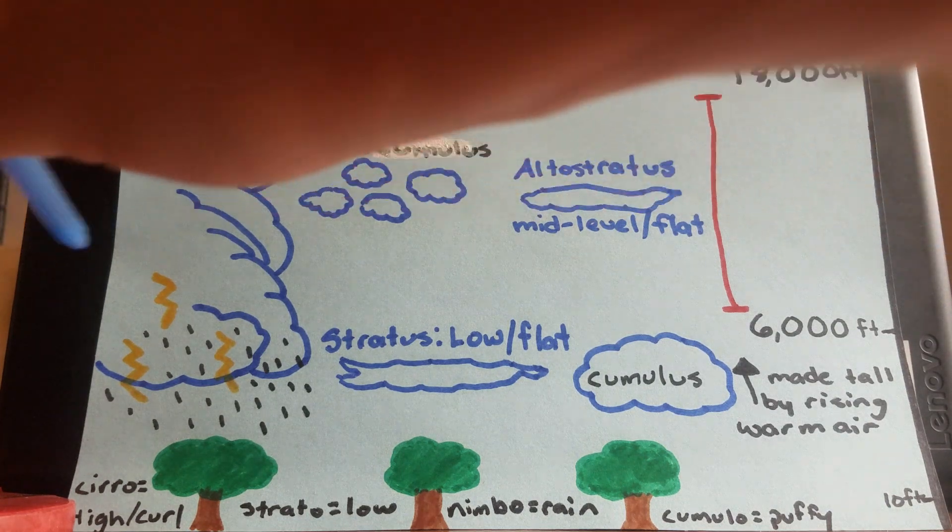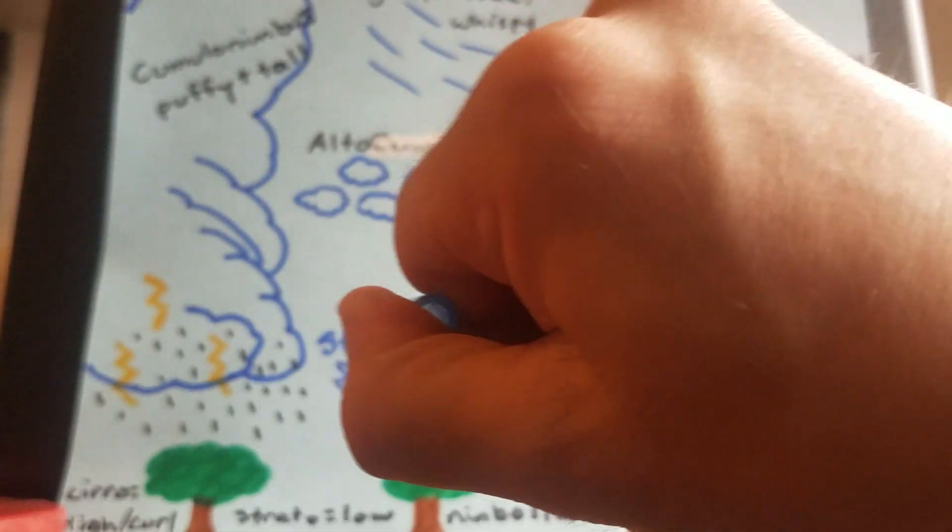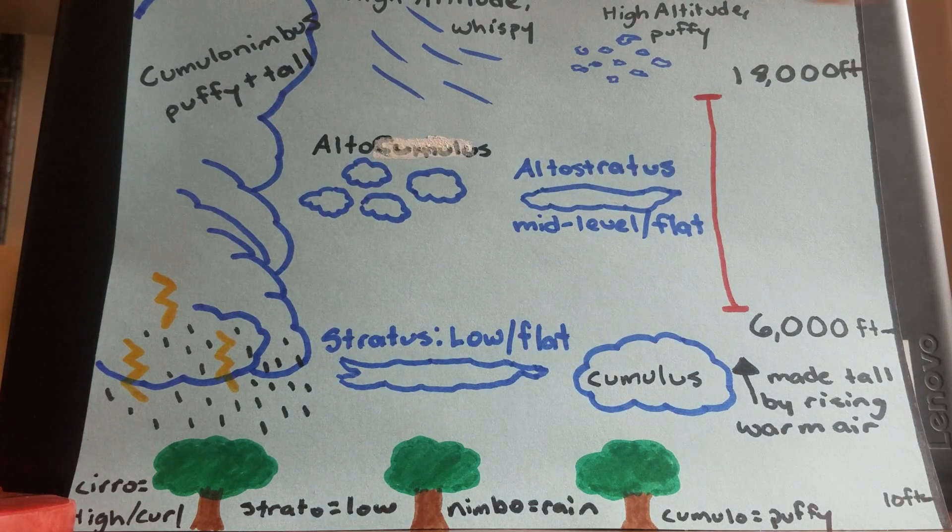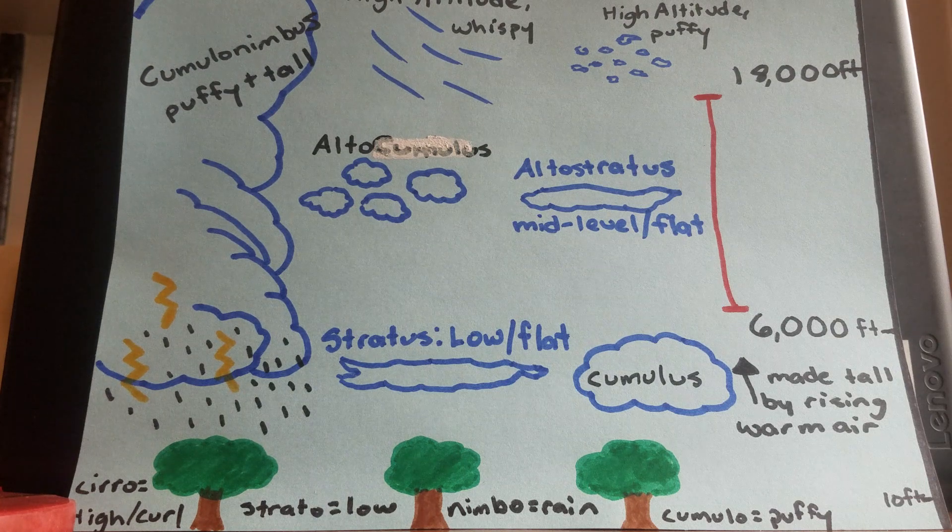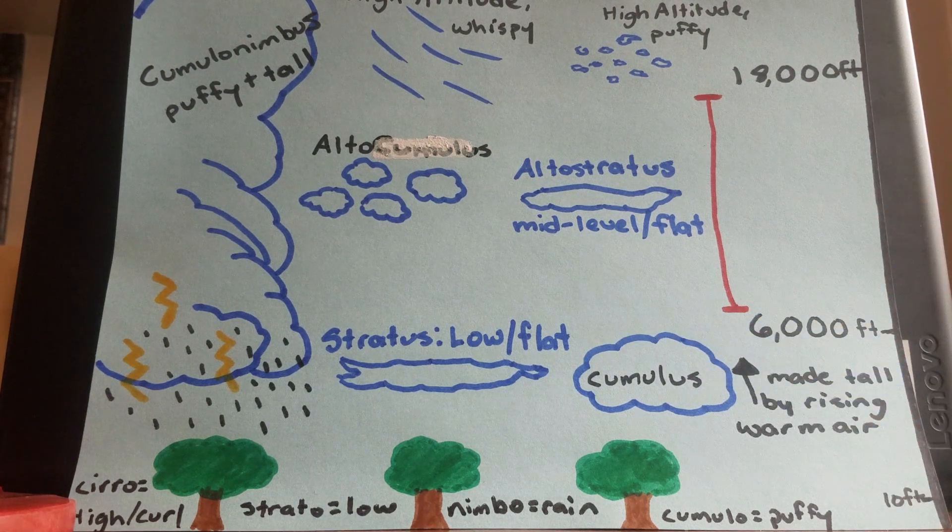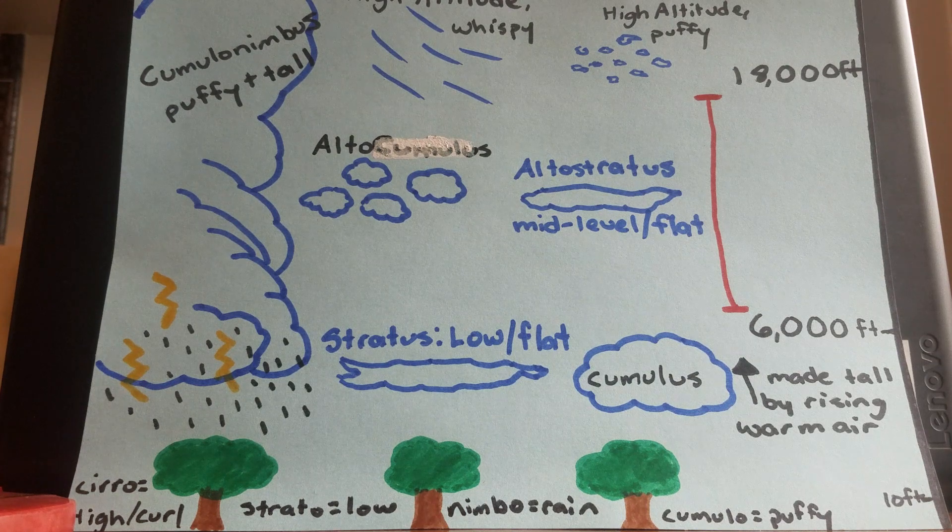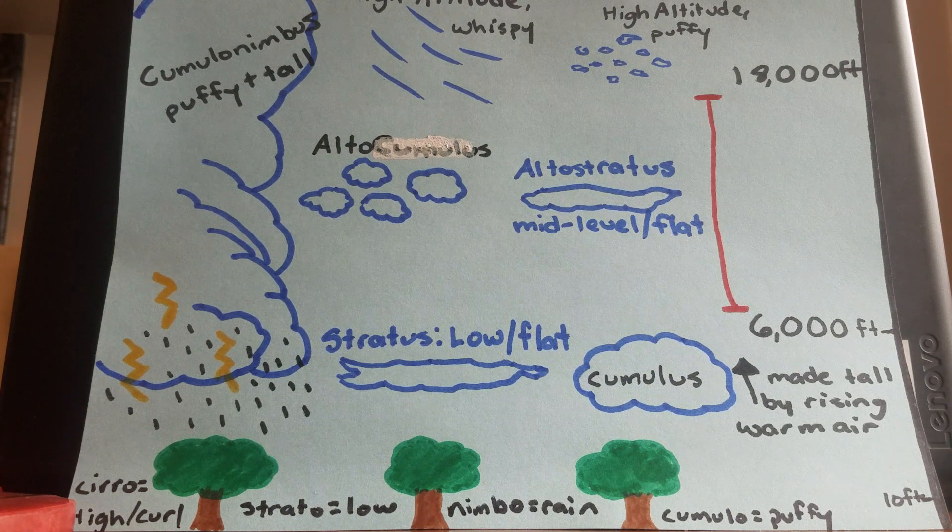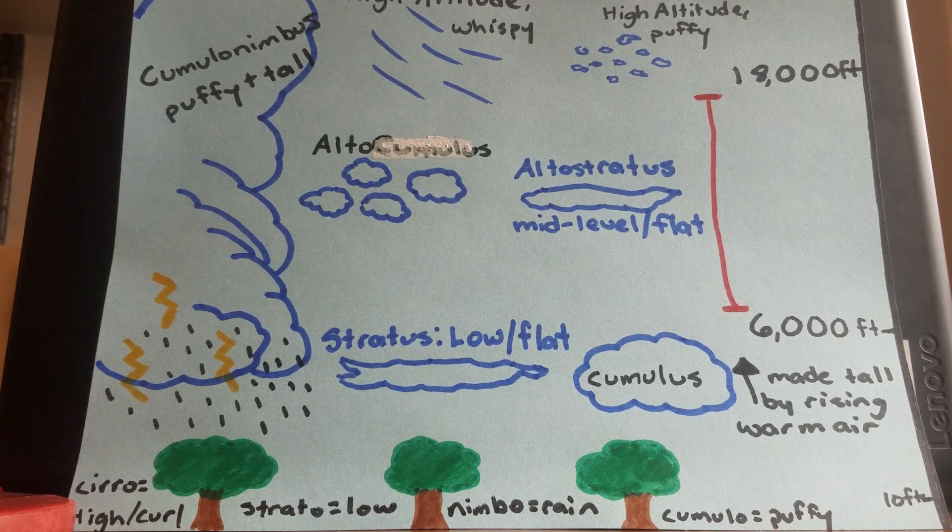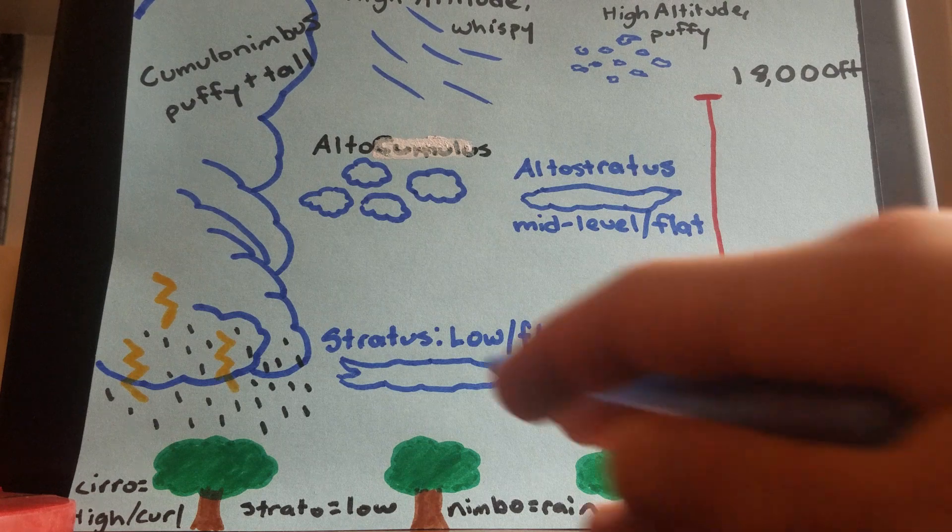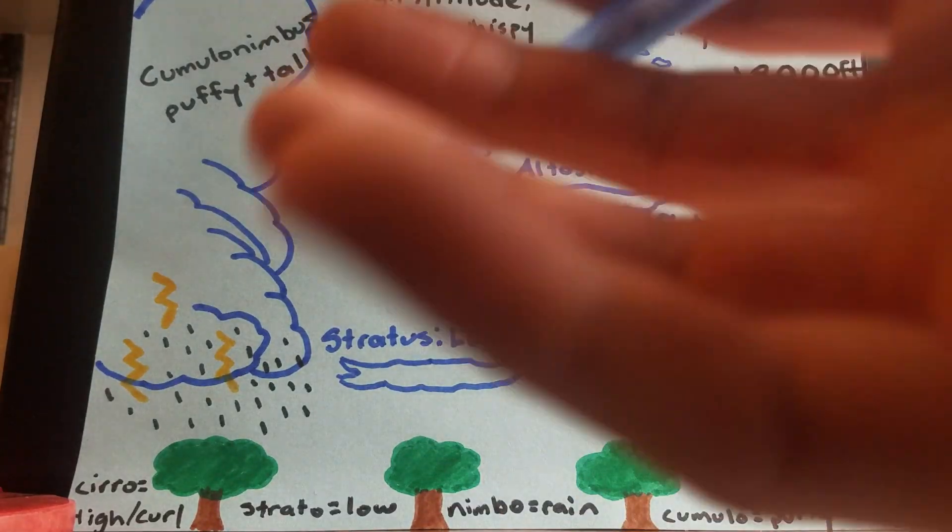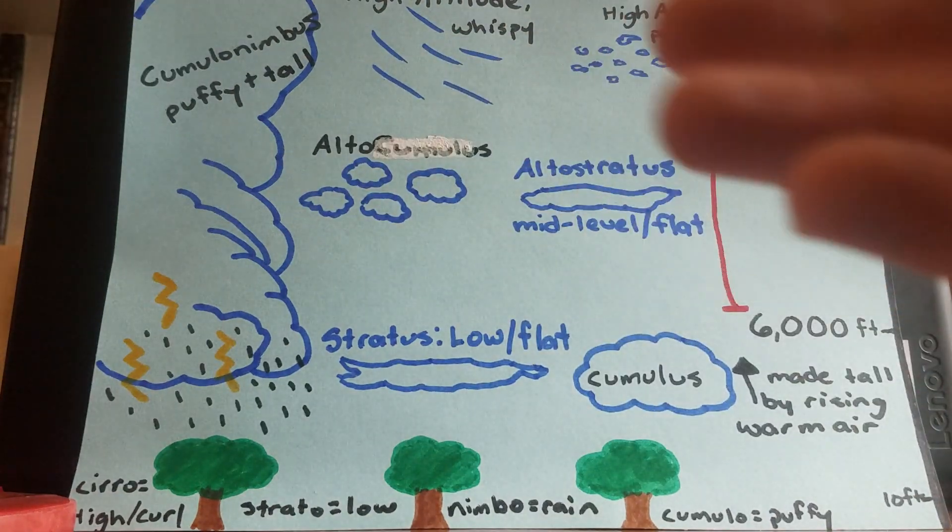So the first set of clouds, you have stratus clouds, which are very flat and they hover very, very low, typically under 6,000 feet. And you have cumulus clouds. Cumulus clouds are the very stereotypically looking clouds that are very big and white and puffy. Like when you look up a cloud on the internet, it's almost always a cumulus cloud. You also have stratocumulus clouds. It's kind of a hybrid between the two. They're very puffy, but they're also flat.